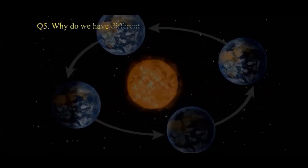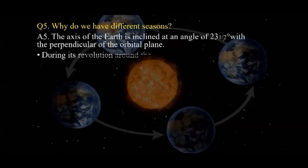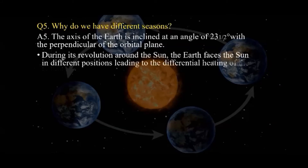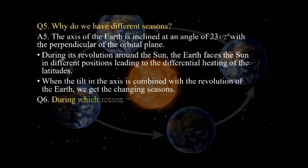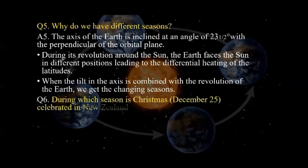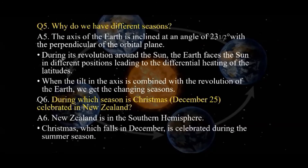We have different seasons due to the following reasons. First, the axis of the Earth is inclined at 23.5 degrees with the perpendicular of the orbital plane, and due to this inclined nature, we have different seasons. Also, during the revolution of the Earth around the Sun, the Earth faces the Sun in different positions, leading to differential heating of the latitudes. When the tilt is combined with revolution, we get changing seasons. Christmas, which falls in December, is celebrated during summer season in New Zealand, since New Zealand is in the southern hemisphere.